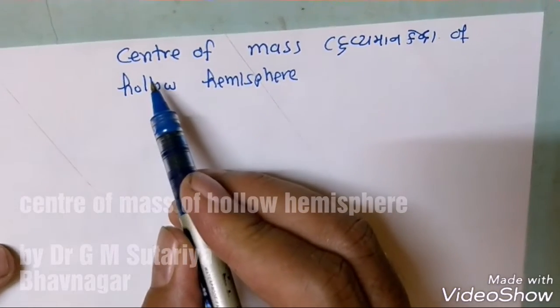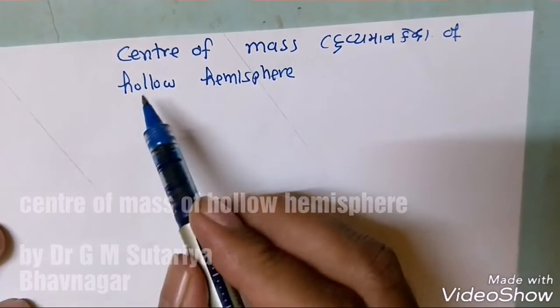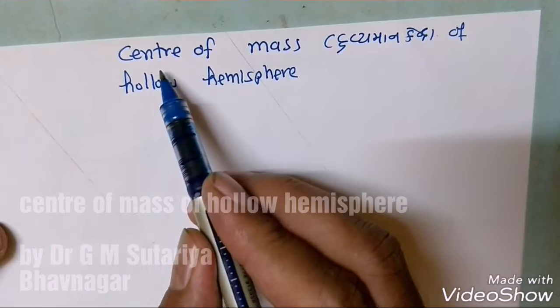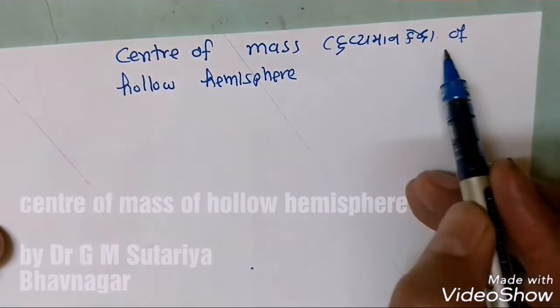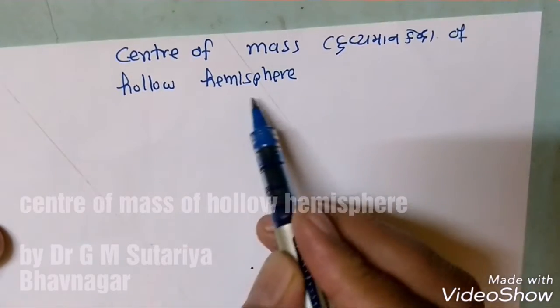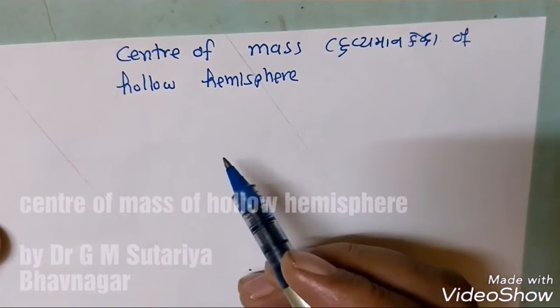So now we will derive the formula for the center of mass of a hollow hemisphere.